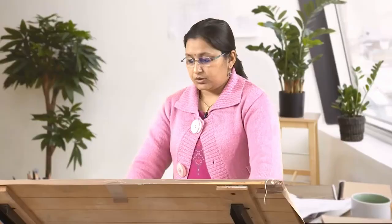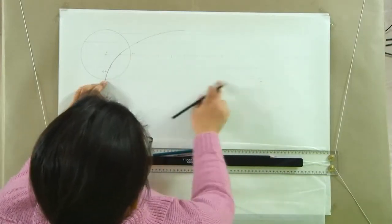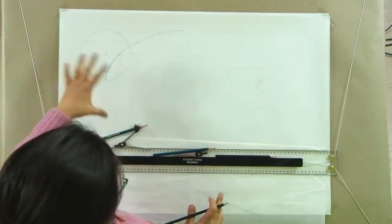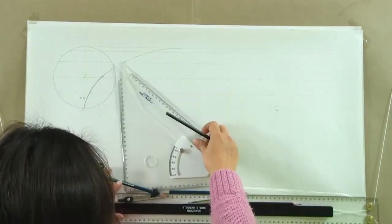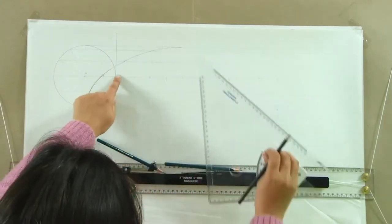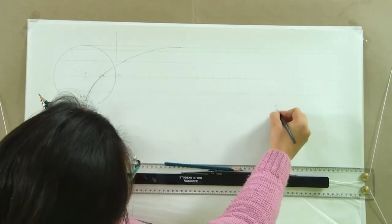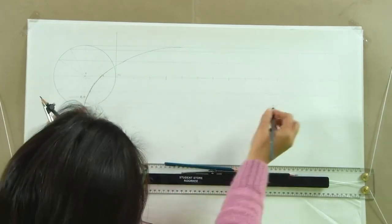For drawing the involute of a circle, we will again take a line equal to the length of the circumference of the circle and divide it into 12 equal parts — any number of parts, I am again taking 12 here as that is convenient. What we have to do here actually is draw tangents to the circle at each of these division points. The tangent to this point here is a vertical line which is what we have here, and at this point the total length of the thread which is equal to the circumference will be opened.